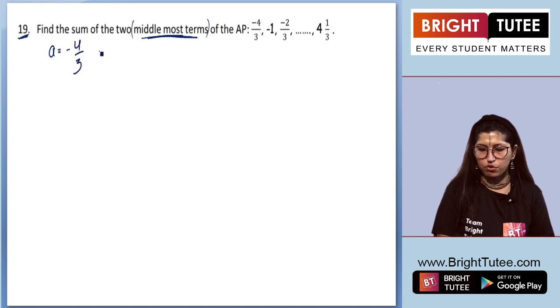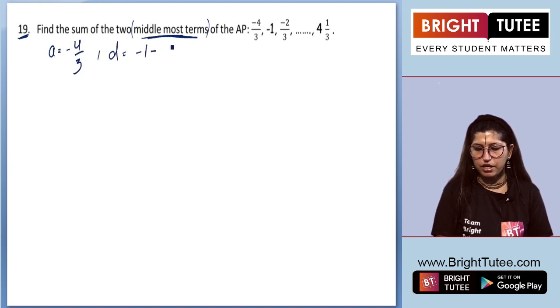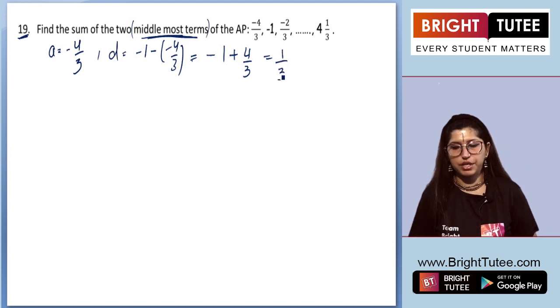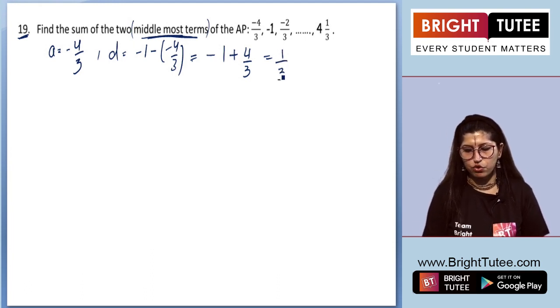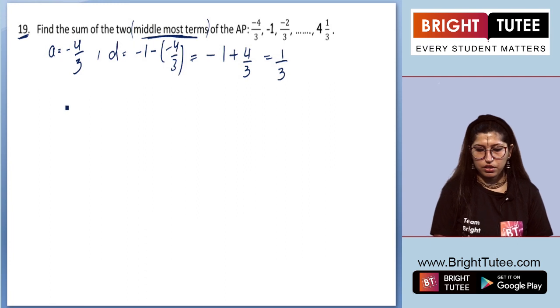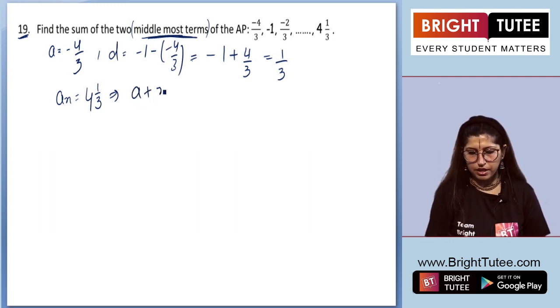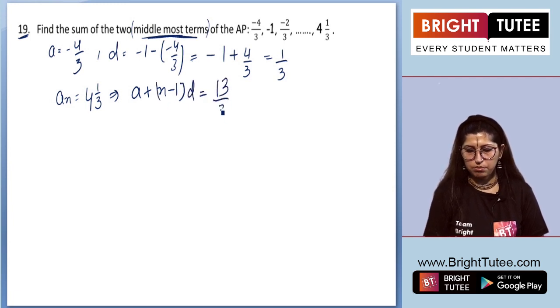A will be minus 4 by 3. D will be minus 1 minus of minus 4 by 3, which is minus 1 plus 4 by 3, which is 1 by 3. Now we know that A is minus 4 by 3 and D is 1 by 3. And we know that the last term is 4 and 1 by 3, which means that the last term, which is A plus N minus 1 D, equals 13 by 3.